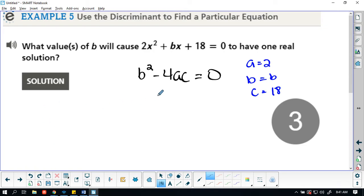Alright, so let's substitute our values in. So we have b squared minus 4 times 2 times 18. And this is going to be equal to 0, because again, the discriminant.